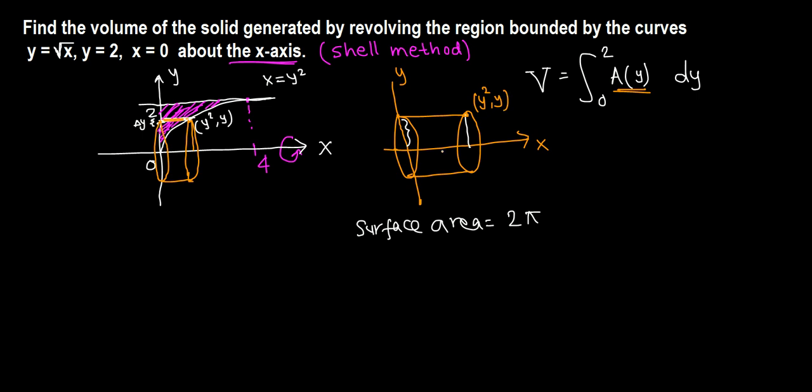Now we know this point here is (y squared, y). The coordinates mean the horizontal distance is y squared and the vertical is y. So the height is y squared and the radius is y. So 2π times radius y times height y squared.